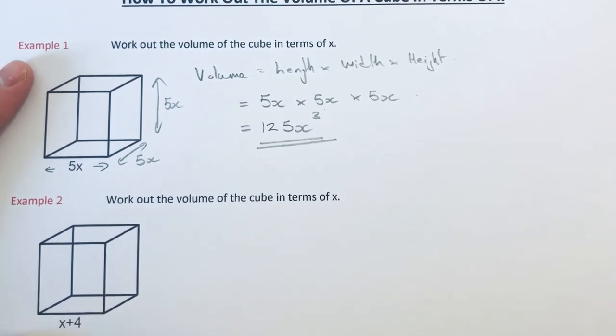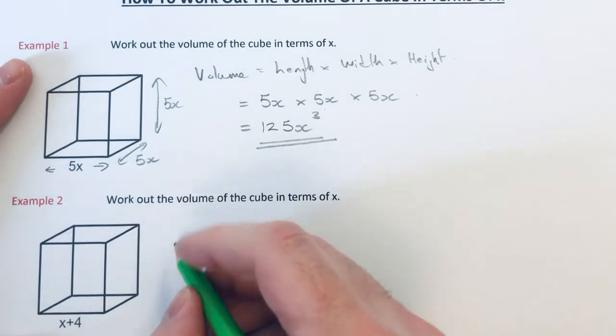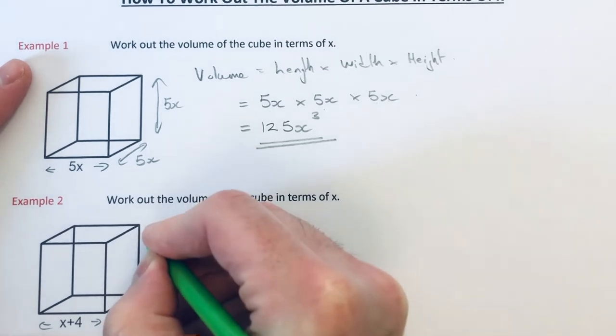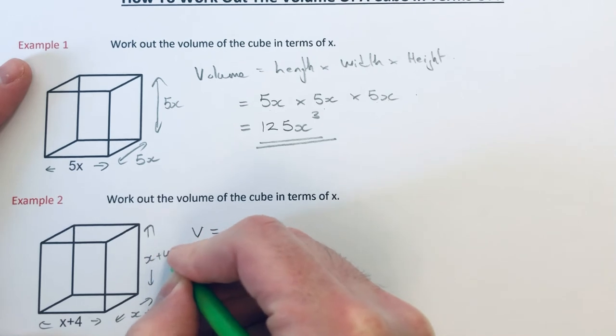This time we have a cube of side length x plus 4. So again to find the volume we multiply the three sides together. So all three sides are x plus 4.